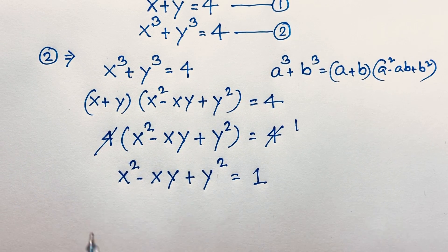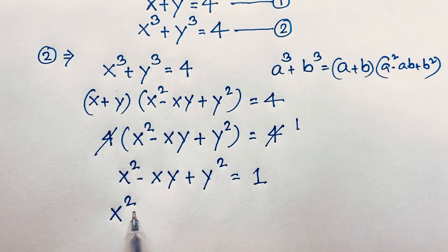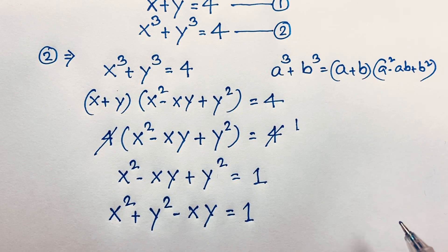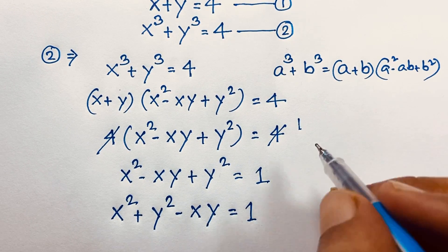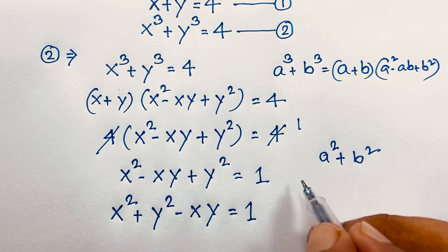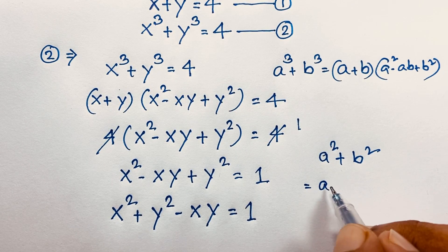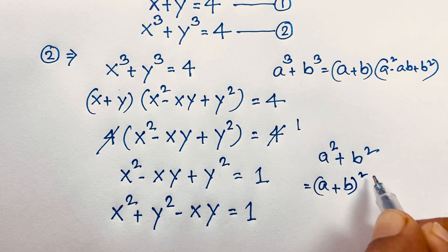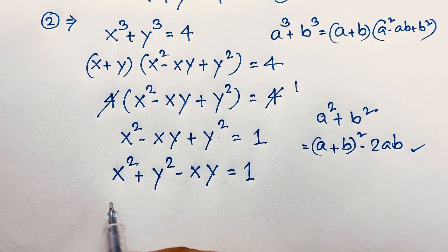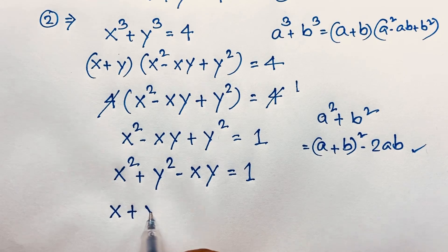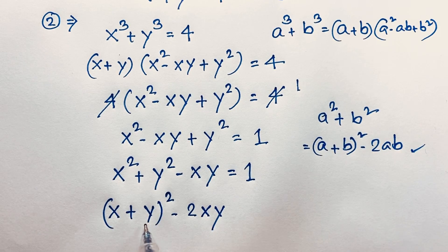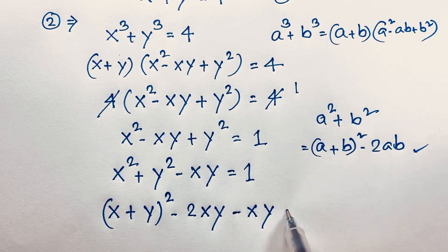Now, this expression becomes x squared plus y squared minus xy is equal to 1. We know that a squared plus b squared equals a plus b whole squared minus 2ab. Applying this formula here, it will be x plus y bracket squared minus 2xy, then minus xy is equal to 1.